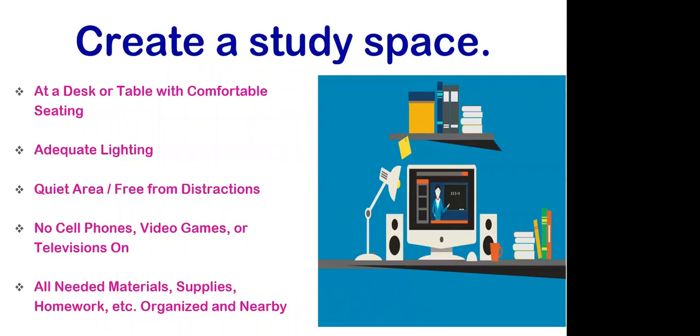When creating an ideal study space, first make sure they have a desk or table — a workstation where they'll have all the materials they need. You don't want children getting up to go get a pencil, pen, calculator, or whatever. Have everything set up there already. Secondly, look at adequate lighting. If adequate lighting isn't present, it will cause the children's eye muscles to strain and affect their vision. Make sure they have adequate lighting.